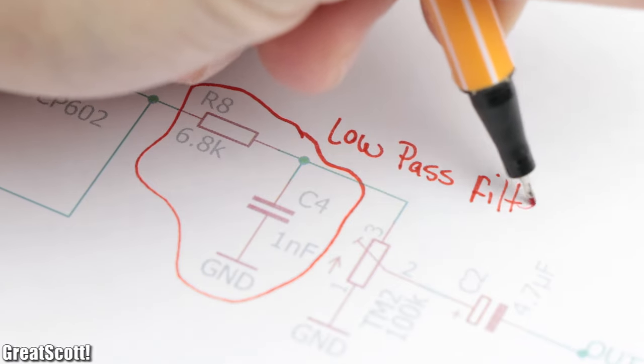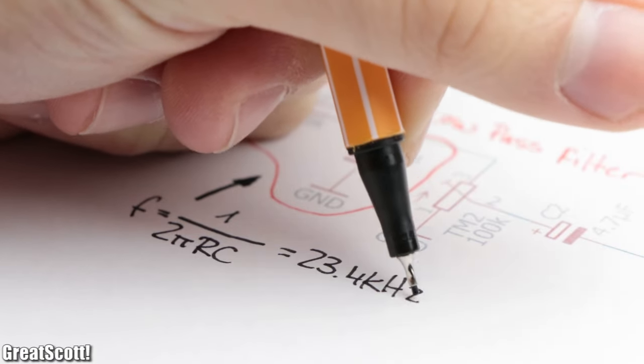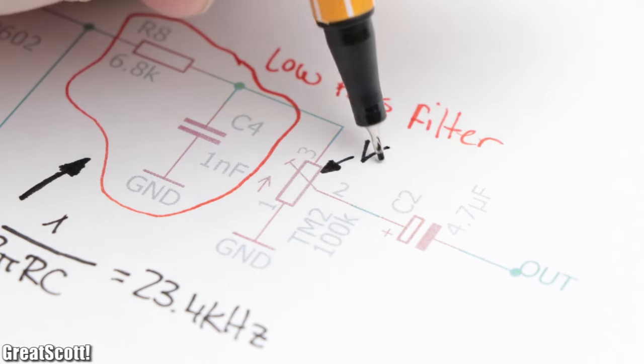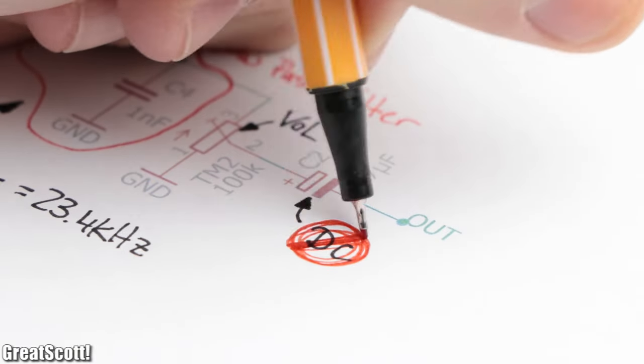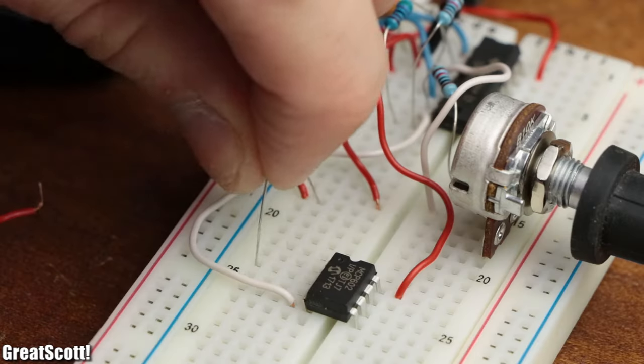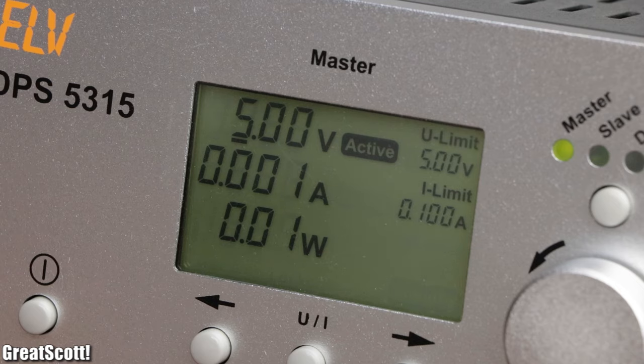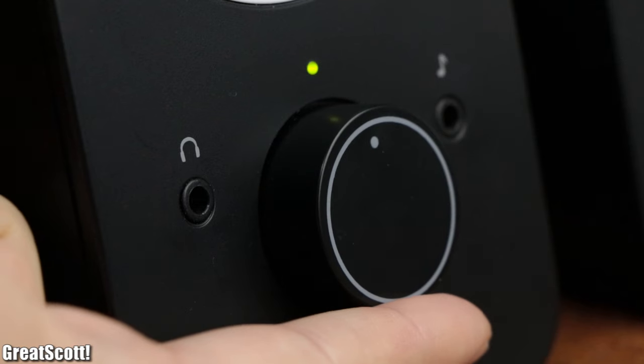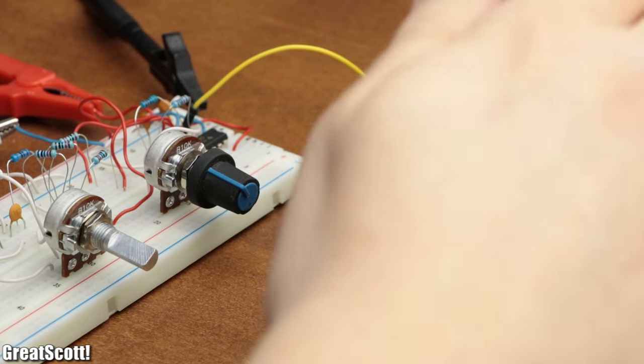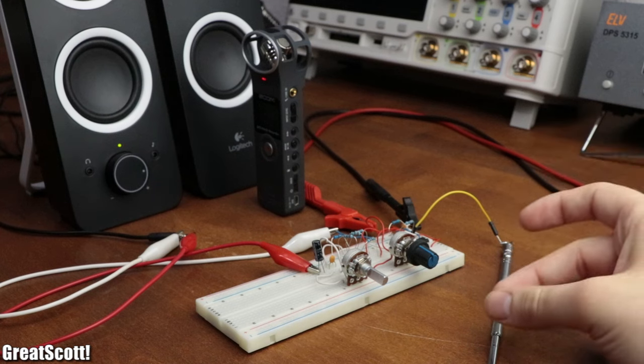Last but not least, we got a low-pass filter with a cutoff frequency of 23.4 kilohertz, a potentiometer to control the volume, and a capacitor to remove the DC offset. And after building up this finalized circuit on the breadboard, powering it with 5 volts, connecting the output to a pair of speakers with built-in amplifier, and fine-tuning the fixed oscillation frequency, I pretty much achieved the result I was hoping for.